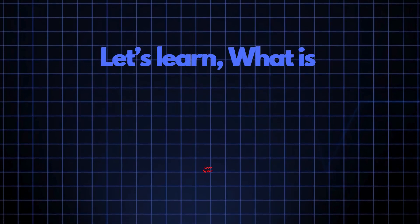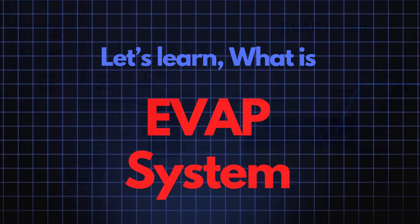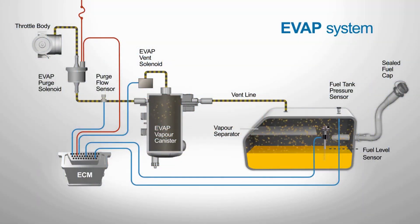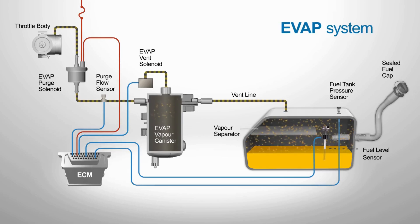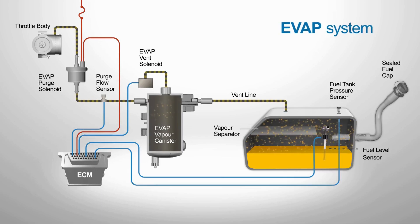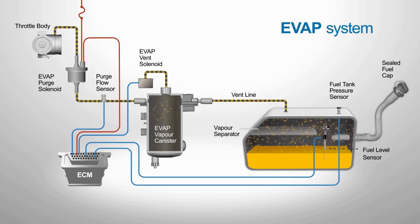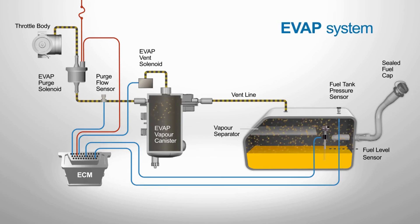Now let's talk about the EVAP system. The purpose of the EVAP system is simple but vital. It's designed to prevent fuel vapors from escaping into the atmosphere, which helps reduce air pollution. Basically, it's a collection of components that create a sealed environment, capturing, storing, and eventually purging volatile fuel vapors from the fuel system.